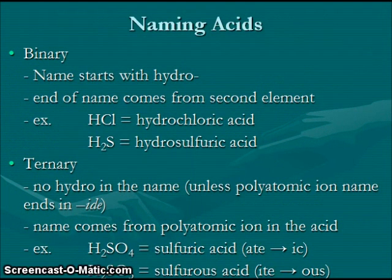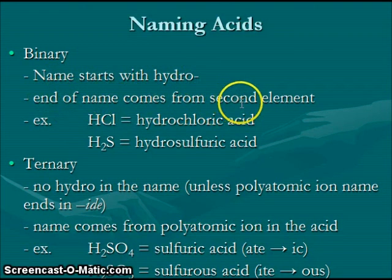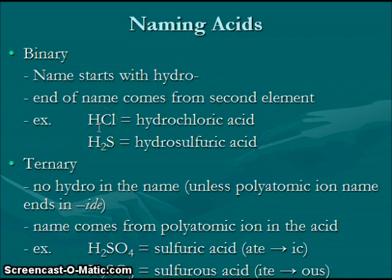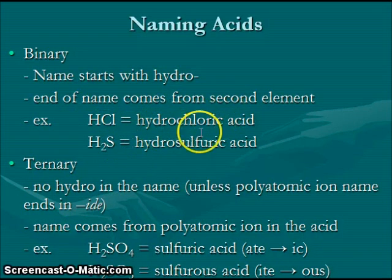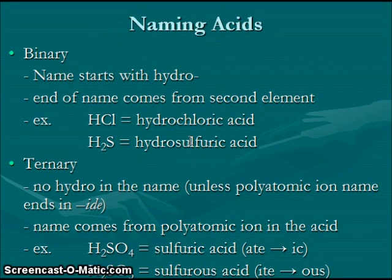Let's discuss the nomenclature of acids. Binary acids have only two elements; their names start with the prefix 'hydro' and the ending comes from the second element. For example, HCl as an ionic compound is hydrogen chloride, but dissolved in water it is called hydrochloric acid — 'chlor' from chlorine. H2S is hydrogen sulfide, but dissolved in water it is called hydrosulfuric acid.